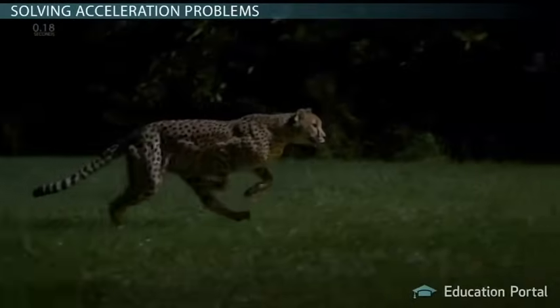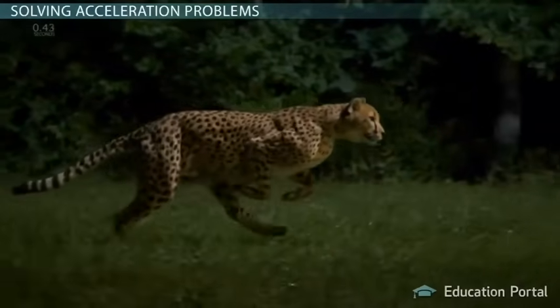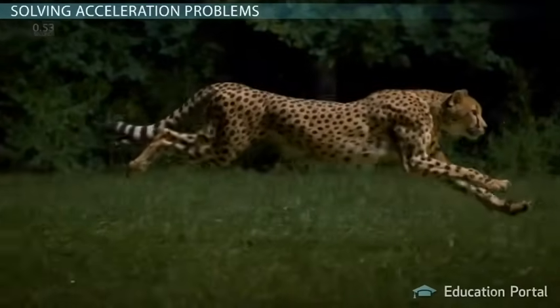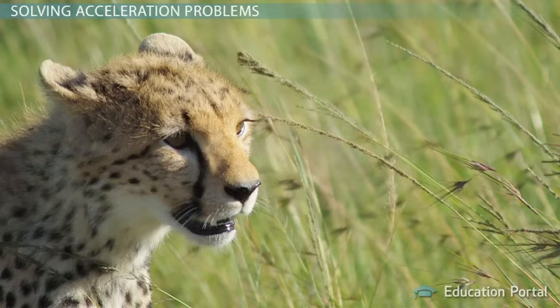Remember the cheetah from the introduction? Let's use what we just learned about acceleration to calculate the acceleration of the cheetah. We know that the cheetah has an initial velocity of zero kilometers per hour because he's standing still, stalking his prey. When he's ready to attack, he can reach a speed of 100 kilometers per hour in three seconds.